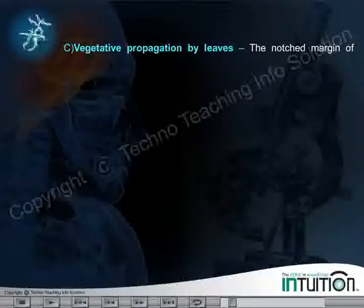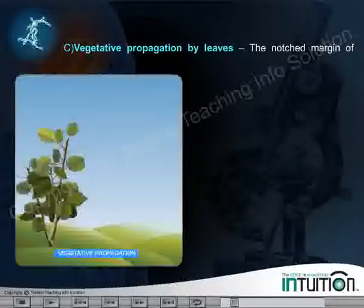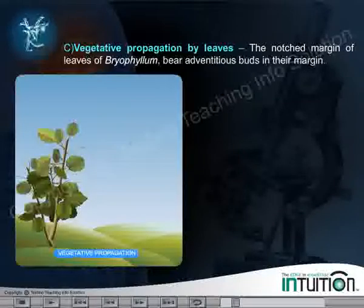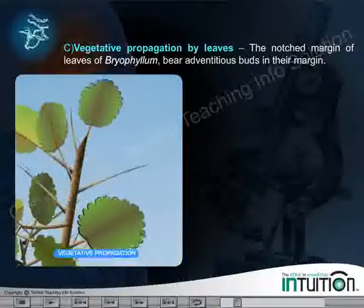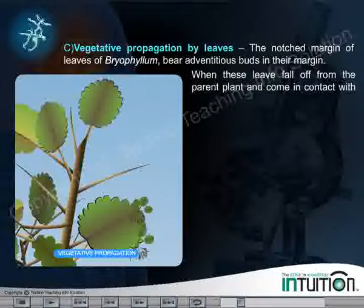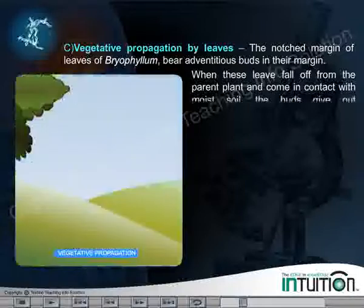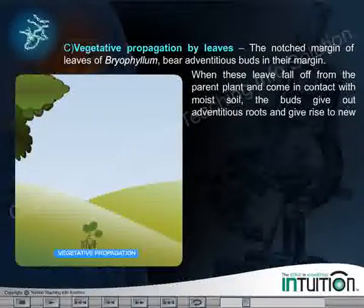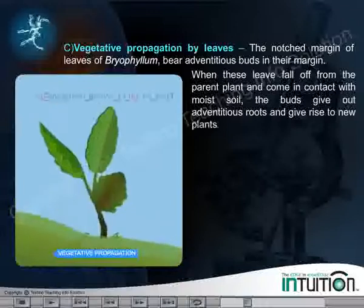Vegetative Propagation by Leaves: The notched margin of leaves of Bryophyllum bear adventitious buds in their margin. When these leaves fall off from the parent plant and come in contact with moist soil, the buds give out adventitious roots and give rise to new plants.